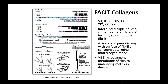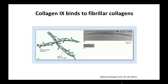The facit collagens — I just want to show one picture about how varied these can be. They associate with the surface of fibrillar collagens and are very important in aiding matrix organization. Here's an EM picture and cartoon showing collagen 9, one of these facit collagens, linking to big fibrillar collagen bundles — very important in higher-level organization. This is a type 2 collagen, which is one of the fibrillar collagens in this particular case.